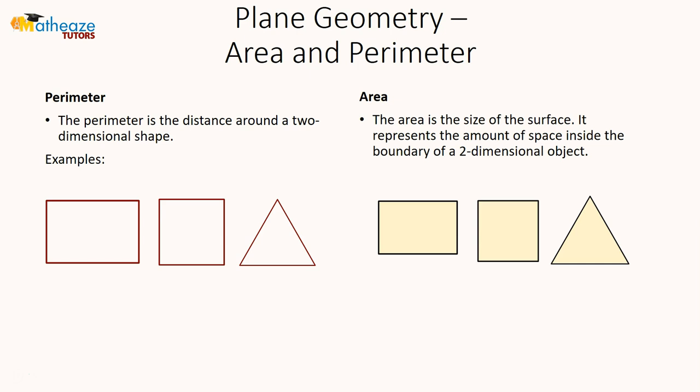The perimeter is the distance around a two-dimensional shape — you can call it the boundary of a shape. The area is the size of the surface; it represents the amount of space that can fit inside a two-dimensional object.